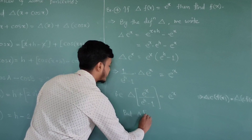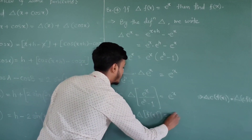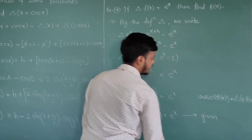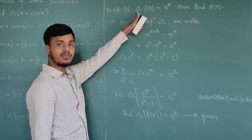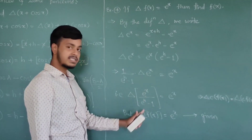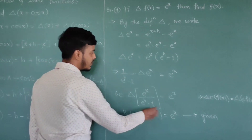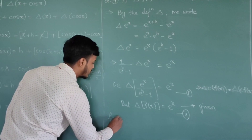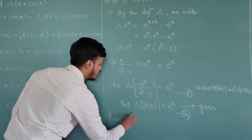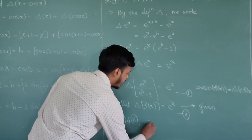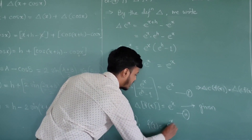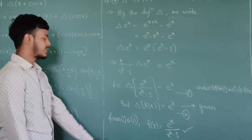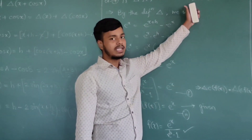But Δf(x) is also equal to eˣ as given. Since the right-hand sides of both equations are the same, the left-hand sides must also be equal. Therefore f(x) = eˣ / (eʰ − 1), and that is the value of f(x) we wanted.